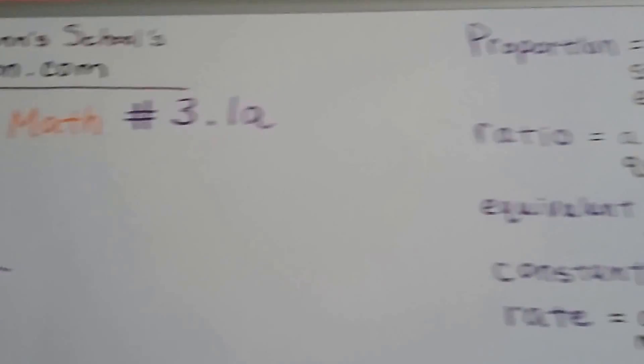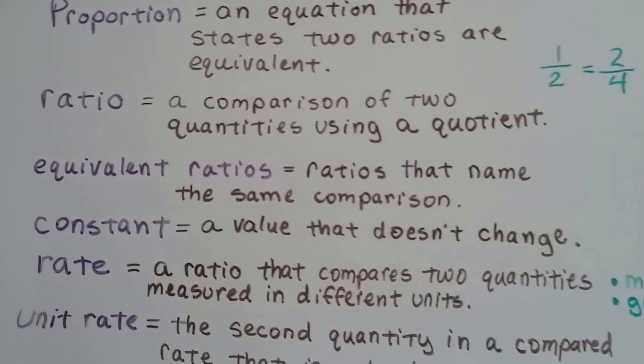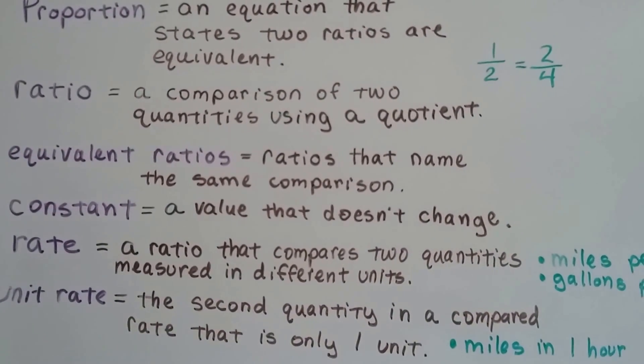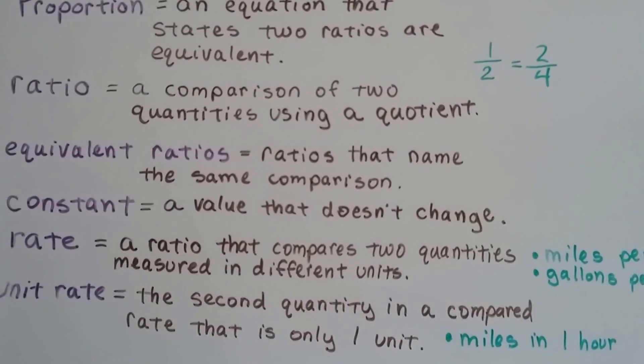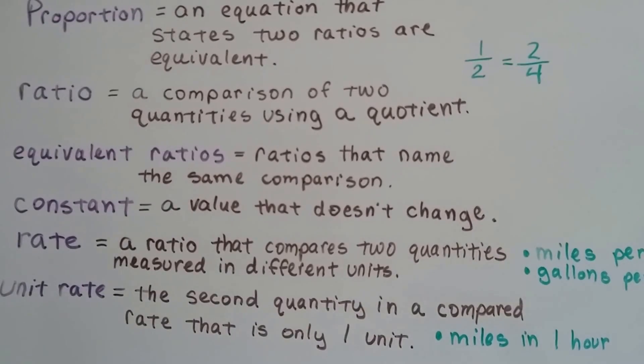We studied proportions in 7th grade, and if you remember, a proportion is an equation that states two ratios are equivalent. A ratio is a comparison of two quantities using a quotient. Equivalent ratios are ratios that name the same comparison.